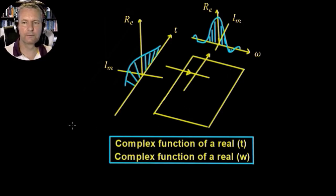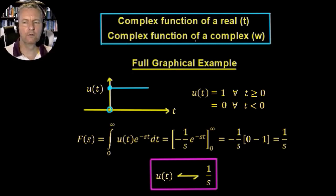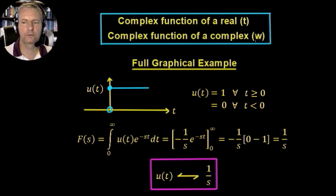The Laplace transform is slightly different. In the time domain it will be the same — a complex function of a real value of time. But in the frequency domain, it's going to be a complex function of a complex variable of frequency. So whereas in the Fourier transform we had a complex function of the real variable ω, in the Laplace transform we'll quickly run out of axes to represent this, but we'll see how we do that in a minute.